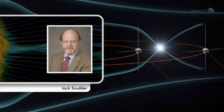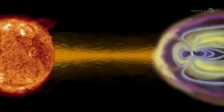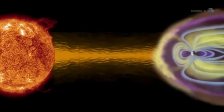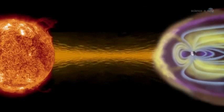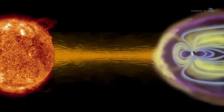Or electron diffusion regions, explains plasma physicist Jack Scudder of the University of Iowa. They're places where the magnetic field of Earth connects to the magnetic field of the Sun, creating an uninterrupted path leading from our own planet to